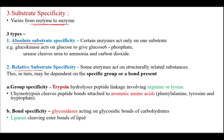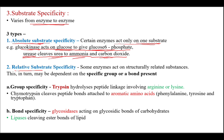Absolute substrate specificity means certain enzymes act only on one substrate. For example, glucokinase acts only on glucose to give glucose-6-phosphate, and urease cleaves only urea to give ammonia and carbon dioxide.